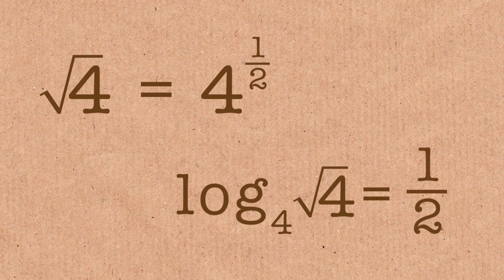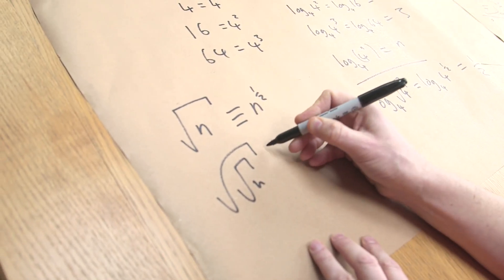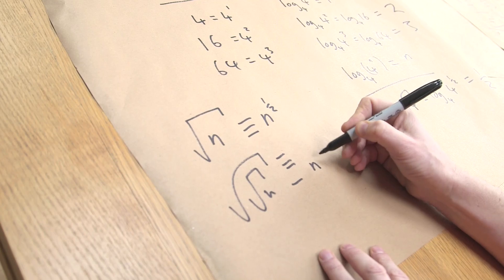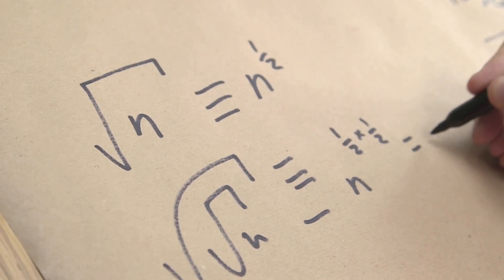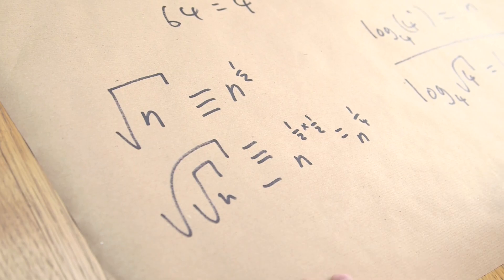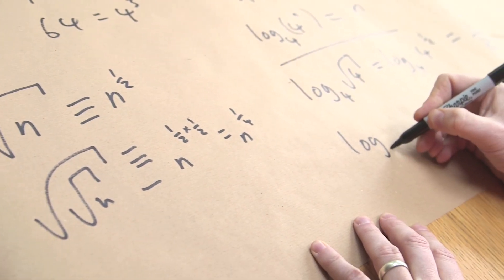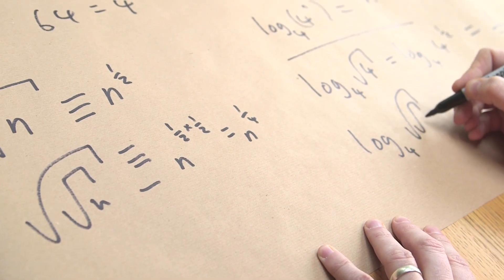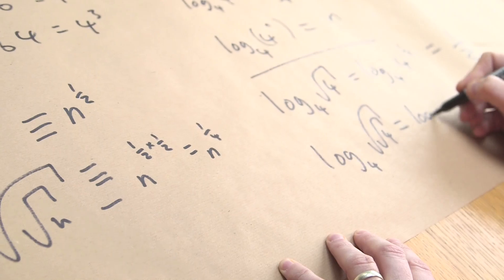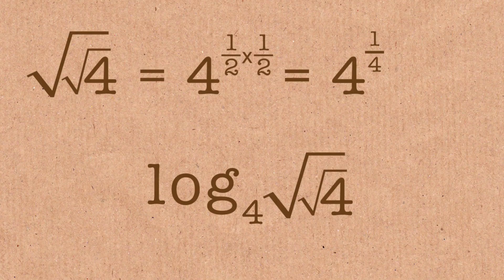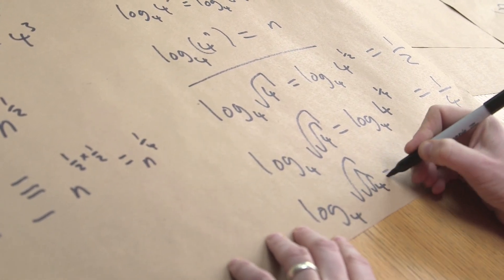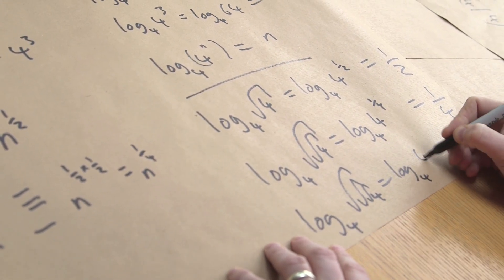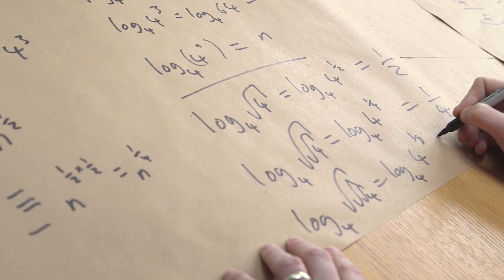And let's do the square root of the square root of n, which is the same thing as n to the half times half, which is the same thing as n to the quarter. We get log base 4 of the square root of the square root of 4 equals a quarter. And I'm just going to carry on. Log the base 4 of the square root of the square root of the square root of 4 equals 1/8.